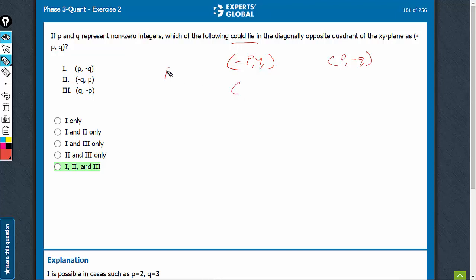For example, if p is equal to 2 and q is equal to 3, (q, -q) will be (3, -3), and (-q, p) will be (-3, 2). Imagine, draw the coordinate axis. x is negative, y is positive. So, this quadrant.